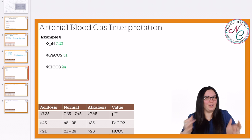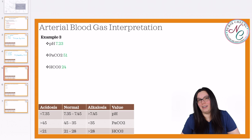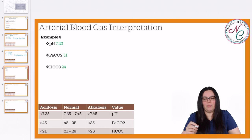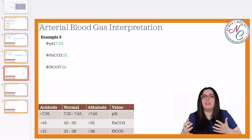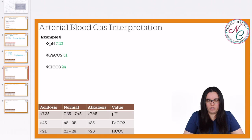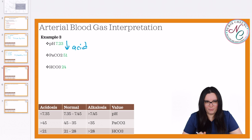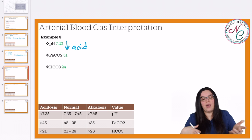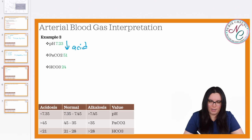It's going to get easier, I promise. We're going to do some more examples. We have a pH of 7.23, a PaCO2 of 51, and a bicarbonate HCO3 of 24. As always, we begin with our pH. Our pH is 7.23. That is less than our 7.35 normal value, so we know that we are in an acidotic state. Next, we need to take a look at our PaCO2. Normal is 35 to 45. We know that 51 is higher than 45.